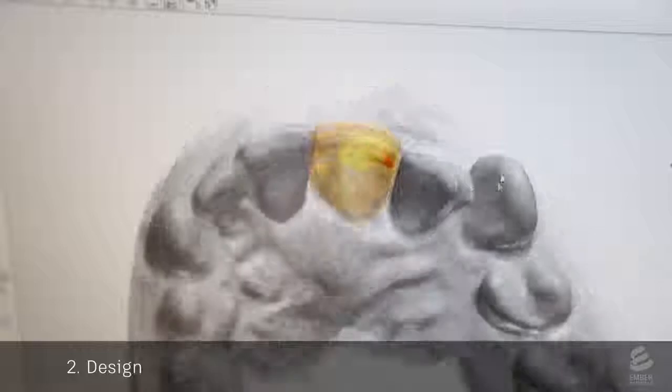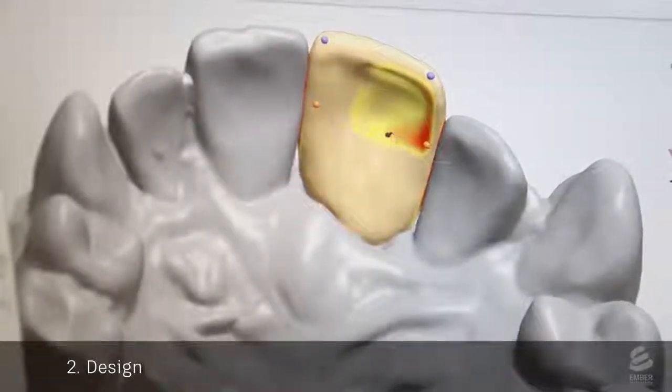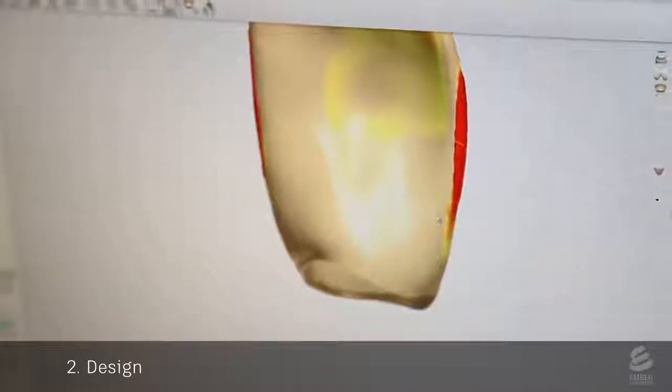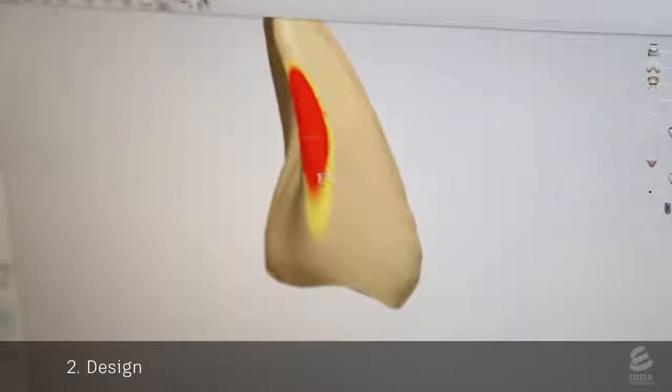The red regions indicate occlusions. This is where the model would collide with other teeth. The technician pushes and pulls on the mesh to make sure the tooth will fit.